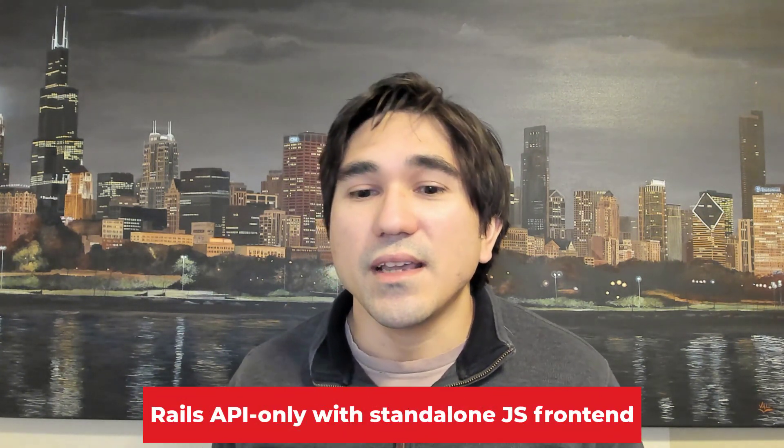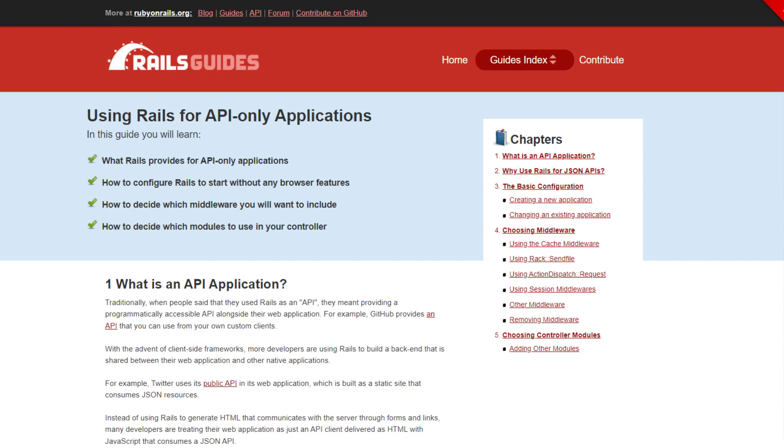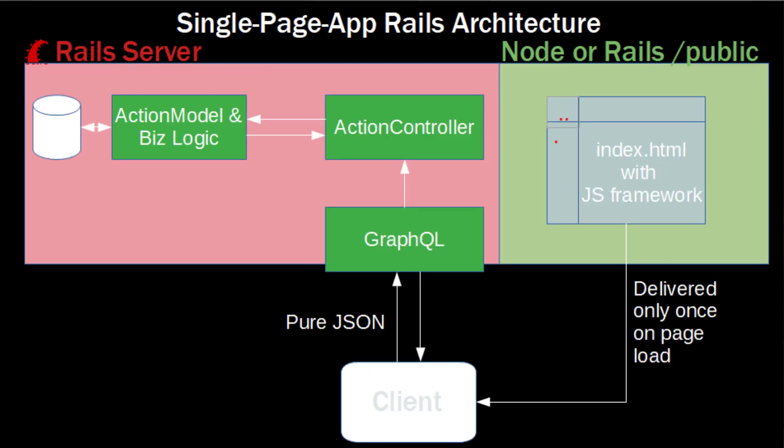The nice thing about Rails right now is that it gives you the option to use either one. But there's actually a third option: you could still use the API-only option to build your Rails application. In this setup you're just using Ruby on Rails as a back end, where the front end is a standalone single-page application written in a major JavaScript framework like React, Vue, Angular, or Ember. It's a single-page application that queries your Rails application on the back end via an API, and Rails handles your database and back-end data manipulations while JavaScript does everything on the client side in the browser.